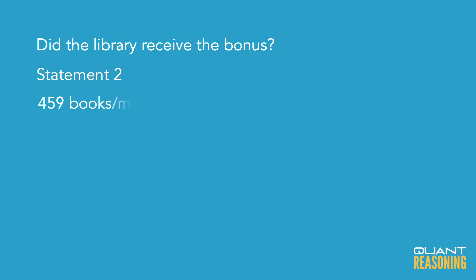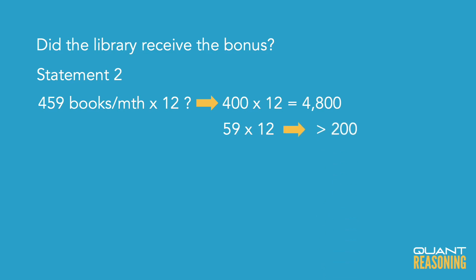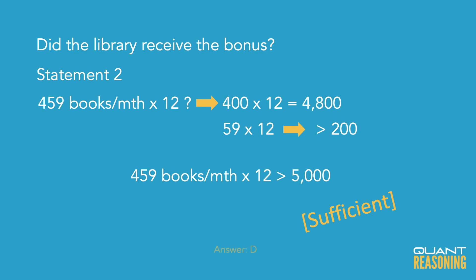400 times 12 is already 4,800 — pretty close to 5,000. We still have 59 times 12 remaining, which would more than cover the missing 200. So I don't have to do the full multiplication — I can convince myself that 459 times 12 is more than 5,000. Therefore statement two is also sufficient on its own, and the correct answer is D.